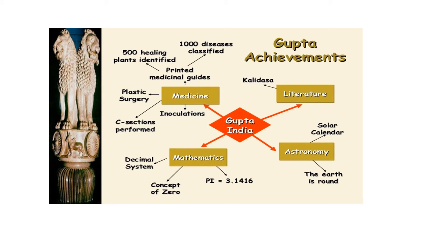Let us now see some of the achievements of the Gupta dynasty. The Guptas had high interest towards art and literature, basically culture. There were many writings by Kalidas — for example, Kumarasambhava — which were renowned in the world. Kalidas flourished during the period of the Gupta dynasty.